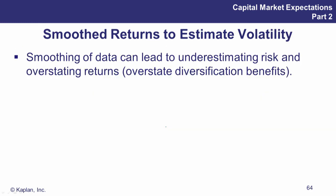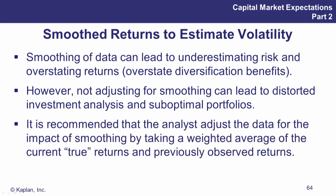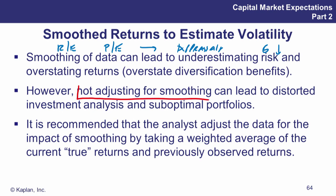Now we think about smooth returns - and when we think about smooth returns, we think about real estate and especially private equity as well. Remember, that's heavily from the problem of appraisals. This is the smoothing of data - the volatility is far too low. One of the ideas here is that the appraisals we have are not really accurate evaluations, so we need to make some adjustments. If you don't adjust for smoothing, then you're getting really fake data - especially fake volatility. And this adjustment to correct the data for the impact of smoothing is often called unsmoothing.